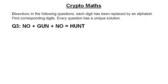Hello everyone, welcome to the class. In this class we are going to take more examples of cryptomaths. We have the same direction: in the following question, each digit has been replaced by an alphabet — find the corresponding digits. Each question has a unique solution. So we have the question: NO + GUN + NO = HUNT.